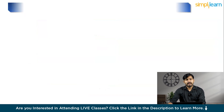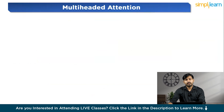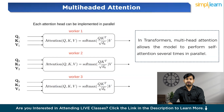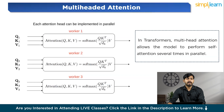Let us understand multi-head attention, which enhances the power of self-attention. In Transformers, multi-head attention allows the model to perform self-attention several times in parallel. Each attention head looks at different parts of the sentence and sequence. By doing this, the model can capture multiple types of relationships at the same time. Instead of relying on just one set of queries, keys, and values, the model has multiple sets or heads. Each head processes the input slightly differently, and then the outputs from all the heads are combined and processed further. This gives the model a much richer understanding of the sequence.